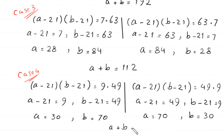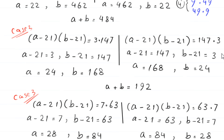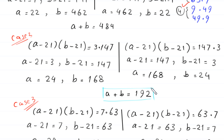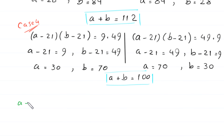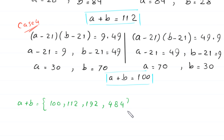From Case 4, a plus b equals 100. So we get four solutions: a plus b equals 100, a plus b equals 112, a plus b equals 192, and a plus b equals 484. The final set of solutions for a plus b is {100, 112, 192, 484}. This is the final answer to this problem.